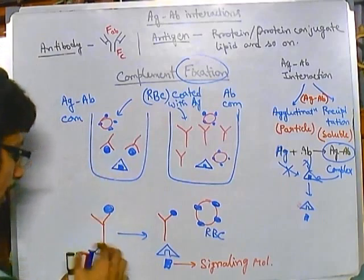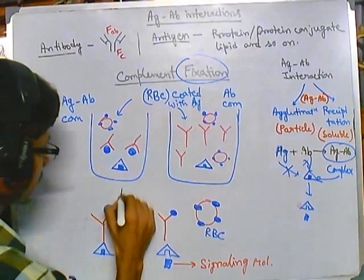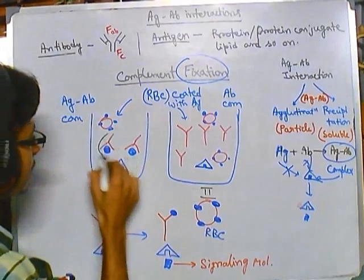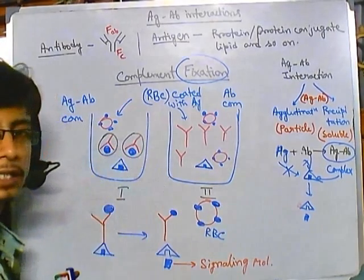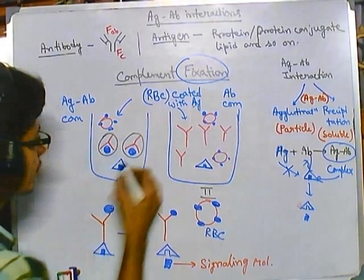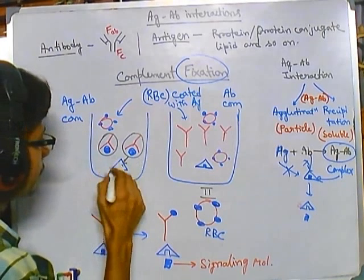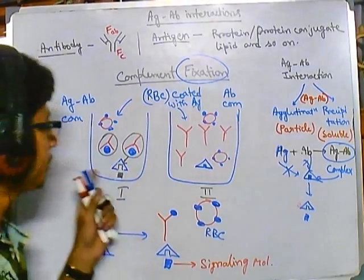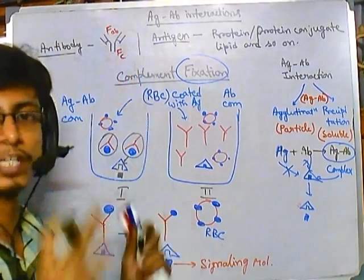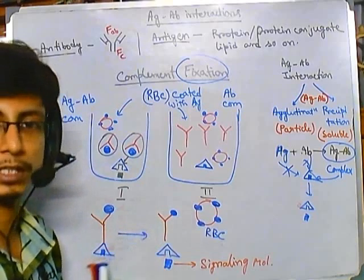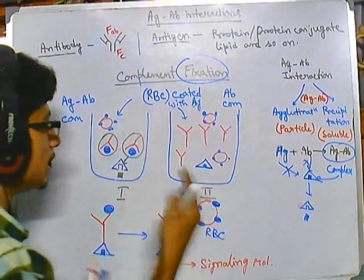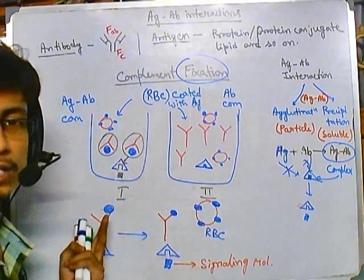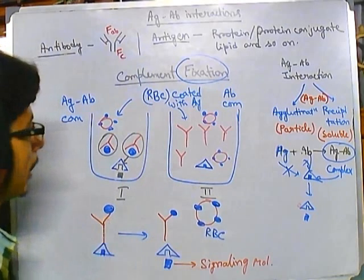In the first scenario, where we have antigen-antibody complex, they already have the ability to fix the complement system. So they fix the complement — all complements present in the vial are fixed. When we then add the antigen-coated red blood cells, there is nothing left to fix them, so there is no effect — no visible change.